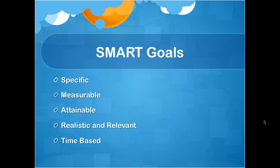R is for realistic and relevant — is it realistic to your current situation? A big goal is different for every person, so set a big goal but make sure it's realistic to you and relevant to your business. Don't set goals that have nothing to do with your business or won't help you grow. T is for time-based — every goal needs a time attached to hold you accountable. By a set date, you're going to accomplish this. Remember: every goal needs to be specific, measurable, attainable, realistic, relevant, and time-based.